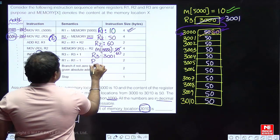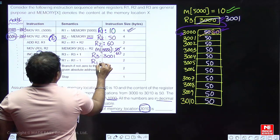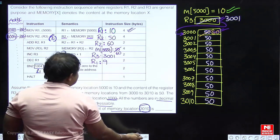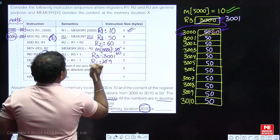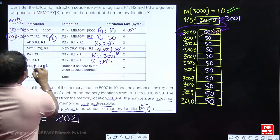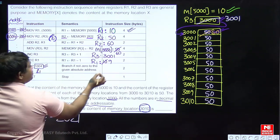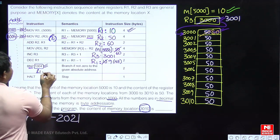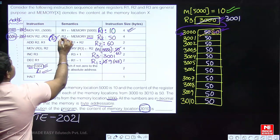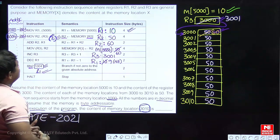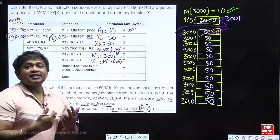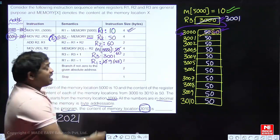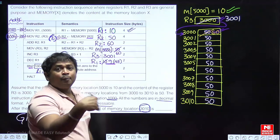R1 is decremented from 10 to 9. Then BNZ checks the condition: R1 = 9 is non-zero, so control transfers back to the second instruction (L1 at address 1004). The loop continues — since R1 is now 9, the loop runs 9 more times.